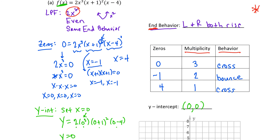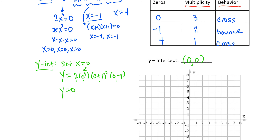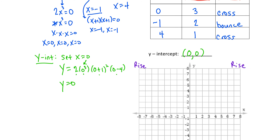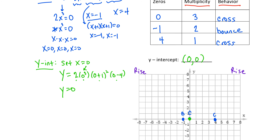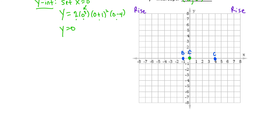Now let's plot the information on the graph. The end behavior: left and right sides both rise. At zero, the graph crosses; at negative one, it bounces; at four, it crosses. The y-intercept is also the origin, so the x-intercept and y-intercept are the same point. We can now sketch the polynomial: the left side rises, it must bounce at negative one — turning around, coming back down, and crossing. Somewhere below it turns around, comes back up through the origin, crosses again at four, and rises beyond that.